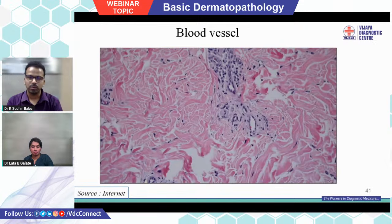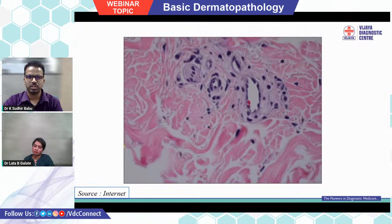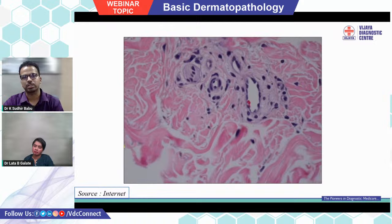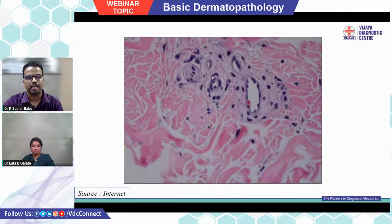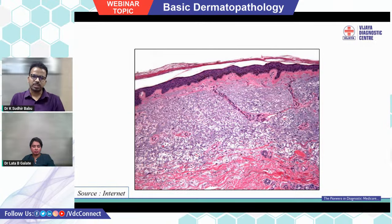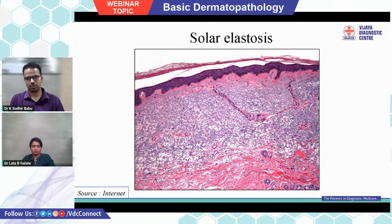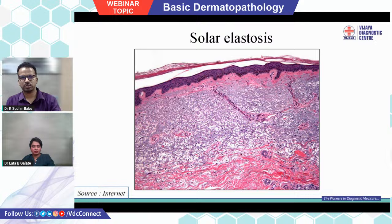Starting with blood vessels: a luminal structure with flattened blue endothelial nuclei and thin lining — all luminal structures, first think of blood vessel. Now, if you see dermis that is not pink but grayish, some damage has occurred — this is a classic case of solar elastosis. Just by knowing that collagen should be pink, you can make the diagnosis of solar elastosis, which appears gray. Commonly noted in sun-exposed skin biopsies in elderly patients.